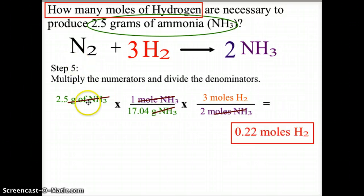When we do the calculations, all the numerators get multiplied and all the denominators get divided, so it's 2.5 grams divided by 17.04 grams. We're going to multiply by 3 moles and then divide by 2 moles, and this should give us an answer of 0.22 moles of hydrogen, which is what we wanted. And our significant digits in this case are 2 significant digits, so 0.22 moles of hydrogen is our final solution.